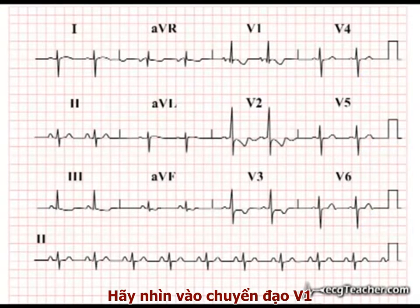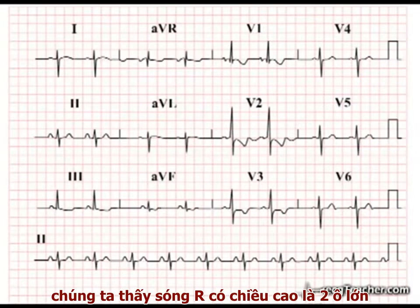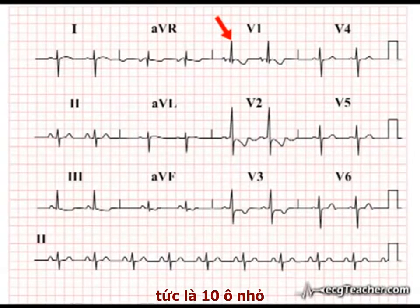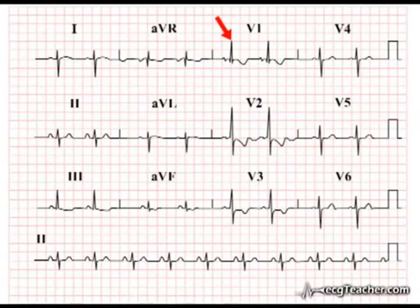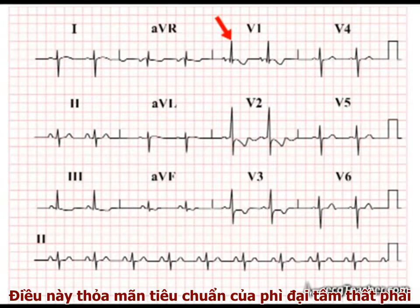When we examine lead V1, we find that the R wave is two large squares in amplitude, or ten small squares, well above our limit of seven small squares. This is consistent with underlying RVH.